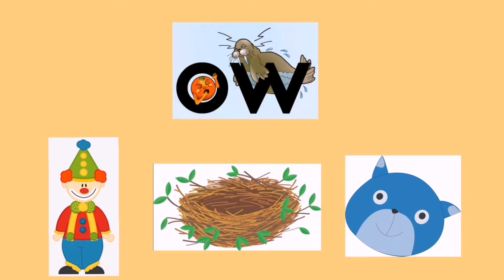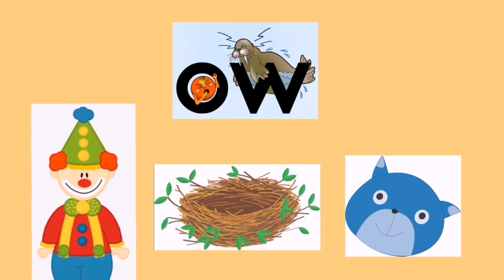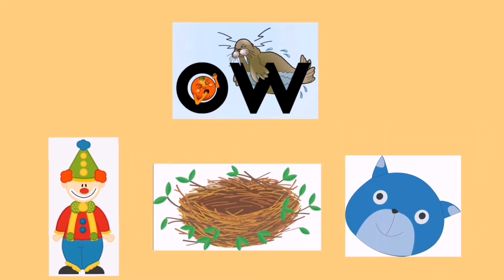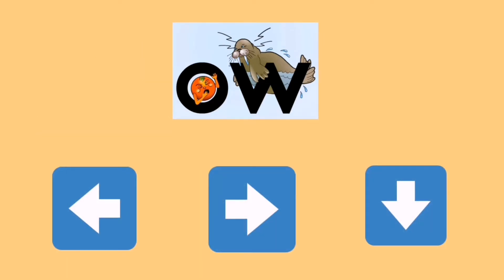Now it's time to show me your one little finger and point to the correct answer on your screen. Are you ready? Which of these pictures has the O-W sound? Is it clown, nest, or cat? Point to the correct answer. The answer is down — D-O-W-N, down.